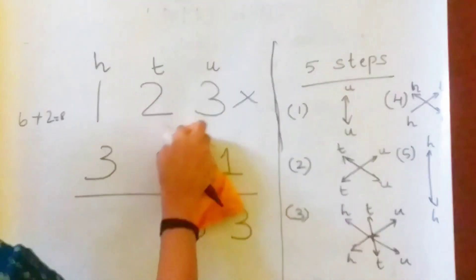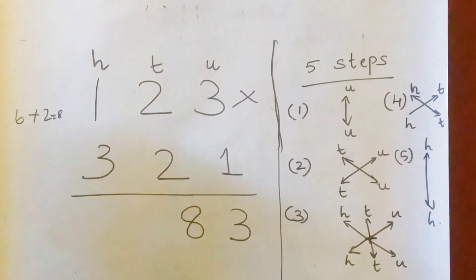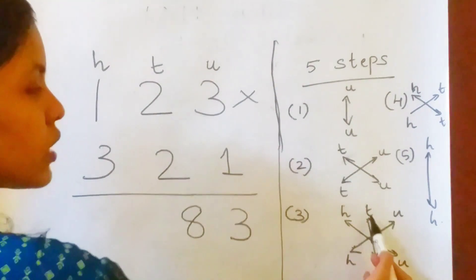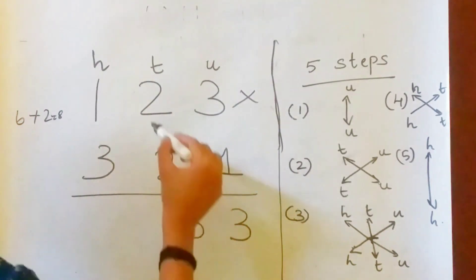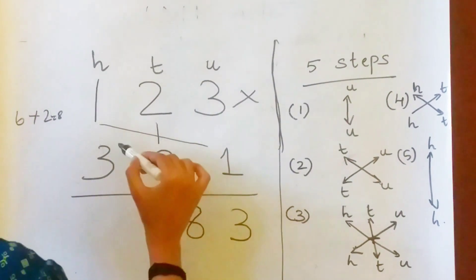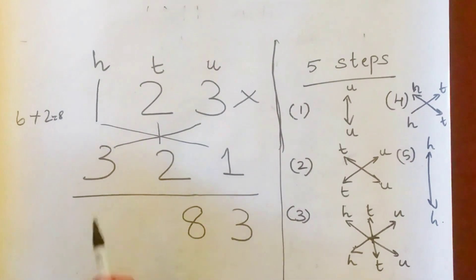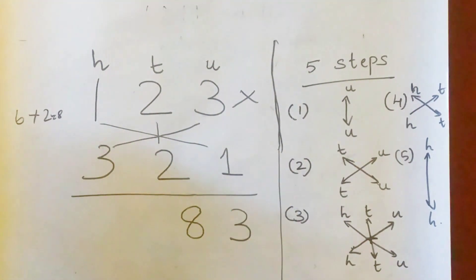Now we are moving on to the third step. Third step might seem a bit complex. But if you practice, it is also very easy. See H into U, T into T, U into H. We are going to take the sum of the products of this number.